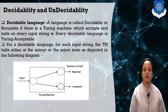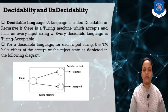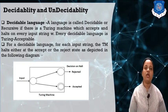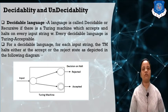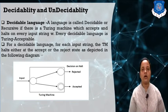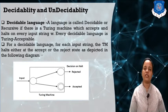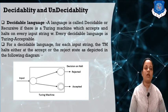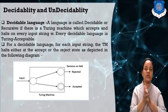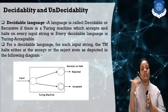If we have a recursive language and we design a Turing machine for it, then we pass an input string. If the input string belongs to that language, the Turing machine will always halt on an accepting state. But if the input string does not belong to the language, the Turing machine will halt on a non-accepting state. So a language is called decidable if there exists a Turing machine which accepts and halts on every input.